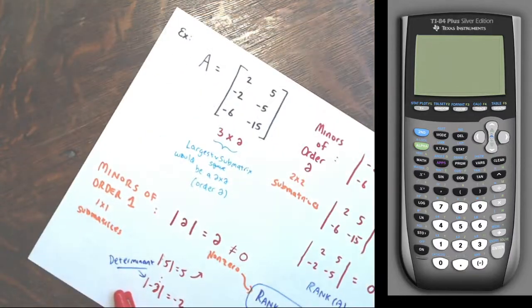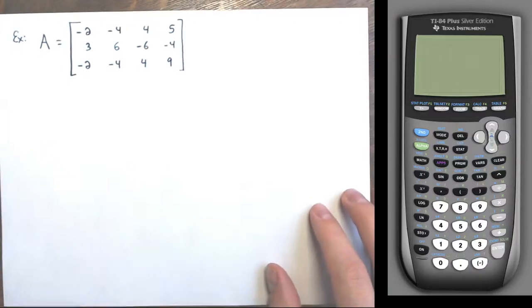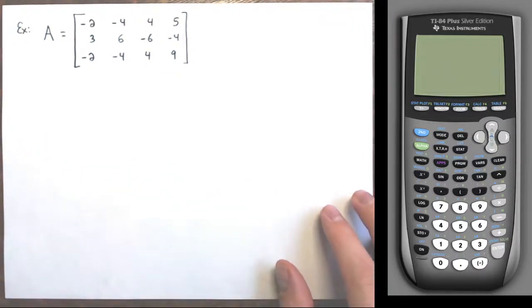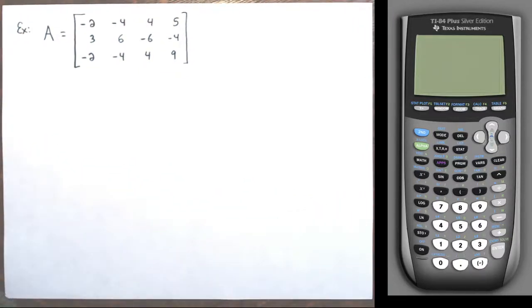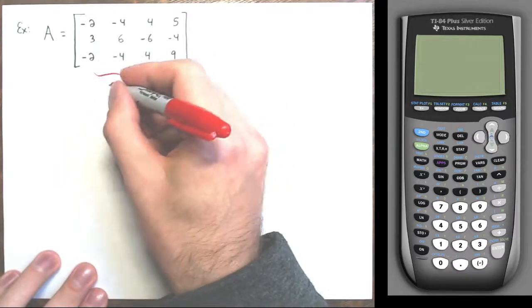My final example — I'm doing the same thing every time. This matrix I actually had in my last video on identifying the rank, and we saw the rank of this matrix was two. Hopefully I'll end up with the same thing using these minors. This is a three by four matrix — three rows, four columns.